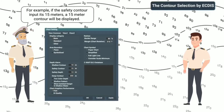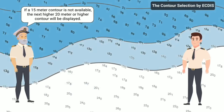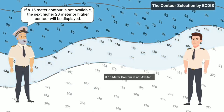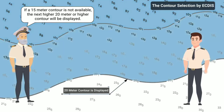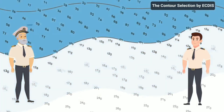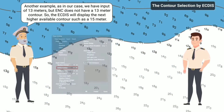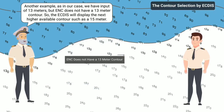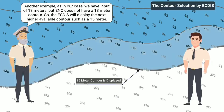For example, if the safety contour input is 15 meters, a 15 meter contour will be displayed. If a 15 meter contour is not available, the next higher 20 meter or higher contour will be displayed. Another example — as in our case, we have an input of 13 meters, but the ENC does not have a 13 meter contour, so the ECDIS will display the next higher available contour such as 15 meters.